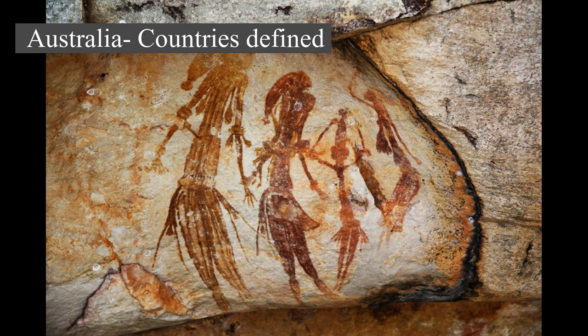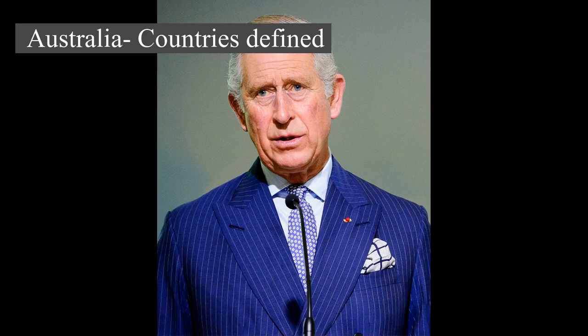The ancestors of Aboriginal Australians began arriving from Southeast Asia approximately 65,000 years ago, during the last Ice Age. Arriving by sea, they settled the continent and had formed approximately 250 distinct language groups by the time of European settlement, maintaining some of the longest known, continuing artistic, and religious traditions in the world.